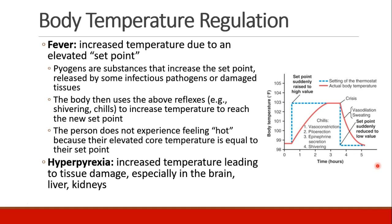Fever is when the body increases its set point. A pyrogen is a substance that increases the set point, usually released by an infectious pathogen or damaged tissue. The body then uses reflexes like shivering or chills in order to increase its temperature to reach the new set point. Since the set point has been increased, when the person has a fever, they don't feel hot because their elevated core temperature equals their set point. Hyperpyrexia is when temperature increases to the point that it causes tissue damage, and susceptible tissues include the brain, the liver, and the kidneys.